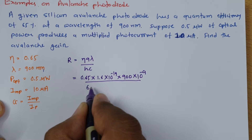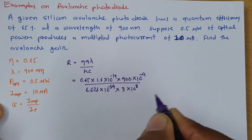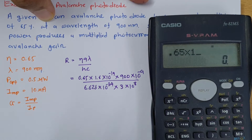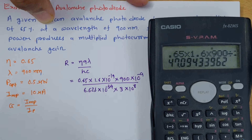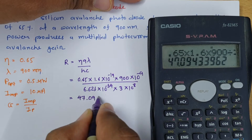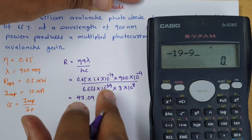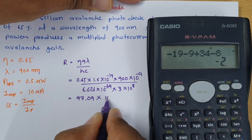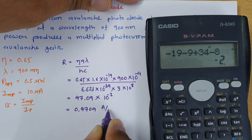Dividing by h, Planck's constant = 6.625×10⁻³⁴, and c, the velocity of light = 3×10⁸. So we calculate: 0.65 × 1.6 × 900 divided by 6.625 divided by 3 = 47.09. For the power of ten: numerator gives −19 + (−9) = −28; denominator gives −34 + 8 = −26, so net is 10⁻². This gives responsivity R = 0.4709 ampere per watt.